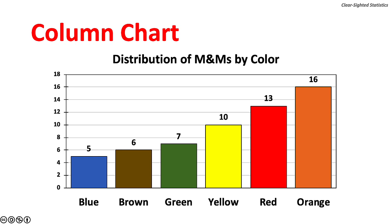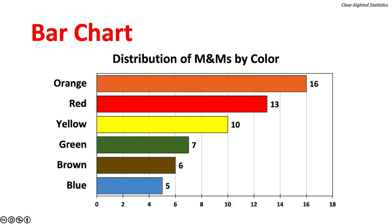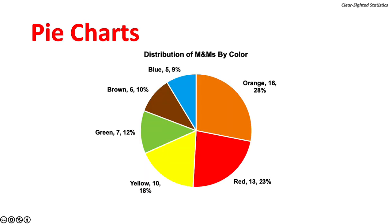There are several ways to chart a frequency table. The first is a column chart, which has vertical bars. On the horizontal or x-axis, the six colors are shown; on the vertical or y-axis, the frequencies or counts are shown. The higher the frequency, the taller the column. Bar charts show the same information as column charts, except the bars are horizontal rather than vertical. Bar charts are useful when there are a lot of classes or the classes have long names. We can also chart this data using a pie chart, but most data visualization experts warn against using pie charts because they make it difficult to visualize the difference between the slices.